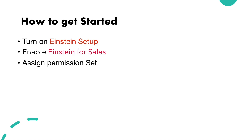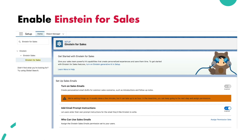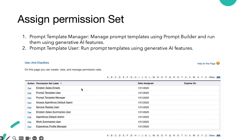Before any further delay, let's see how to get started. There are three main steps: first, enable Einstein Setup; second, if you want to use email or sales capabilities, enable Einstein for Sales; and third, assign the respective permission sets. To enable Einstein Setup, go to Setup, search for 'Einstein Setup', and turn on Einstein. To enable Einstein for Sales, go to Setup, search for 'Einstein for Sales', and turn on Sales Emails. Then assign the two key permission sets: Prompt Template Manager and Prompt Template User.